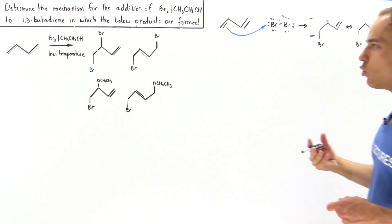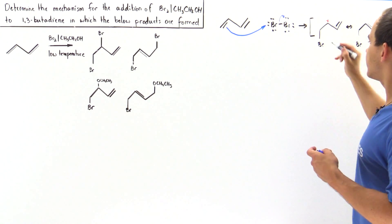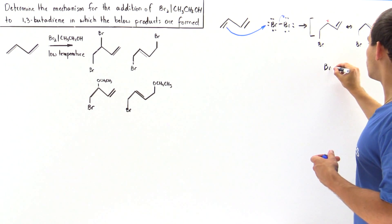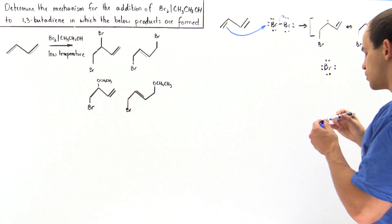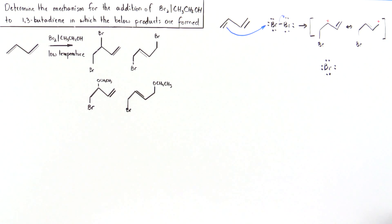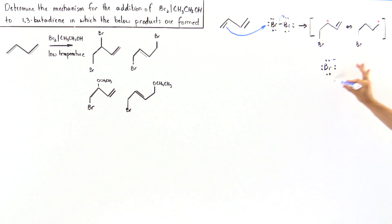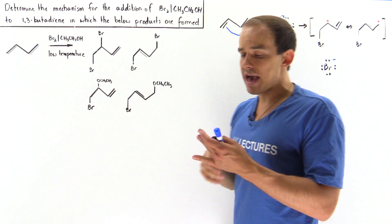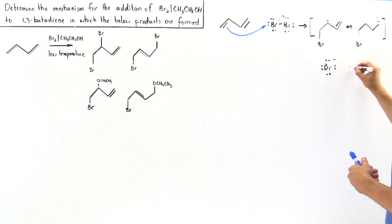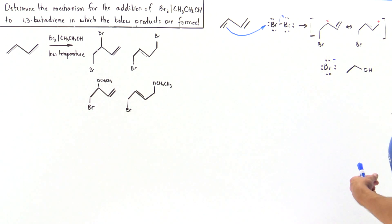Inside our solution, we have the second bromine molecule — the bromide ion — floating around, and this has a negative charge because it has one extra electron. Not only do we have this molecule in our solution, we also have our ethanol. So let's draw our ethanol molecule.